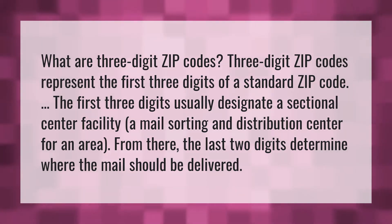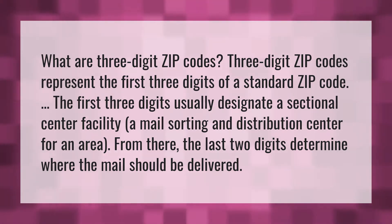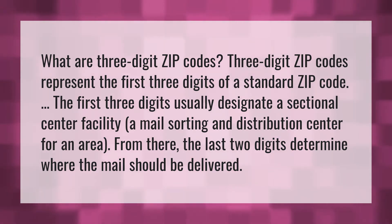What are three-digit zip codes? Three-digit zip codes represent the first three digits of a standard zip code. The first three digits usually designate a sectional center facility, a mail sorting and distribution center for an area. From there, the last two digits determine where the mail should be delivered.